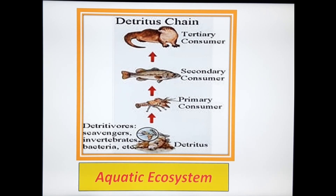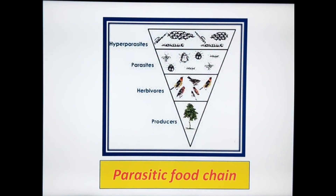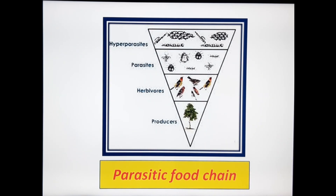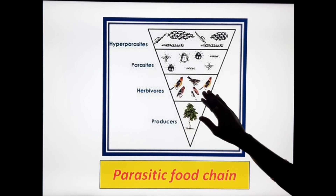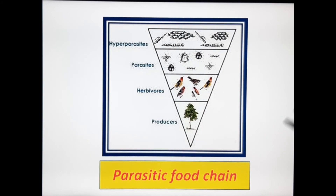The last type is the parasitic food chain. In this food chain, food is transported from large to smaller organisms. Examples: trees → insects and birds; from birds, parasites receive food; from parasites, hyperparasites receive food materials. In the diagram, we clearly observe food transported from larger to smaller organisms: producers → primary consumers → secondary consumers (parasites) → hyperparasites. This is the parasitic food chain.